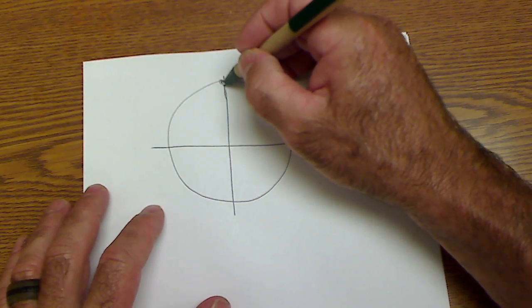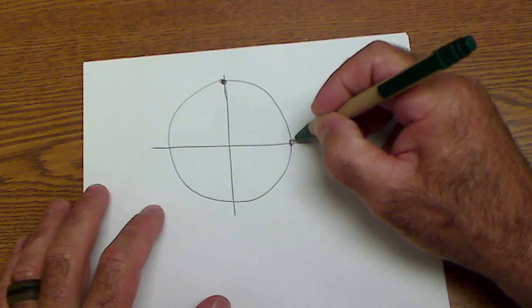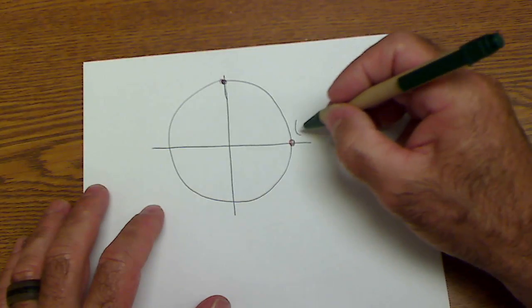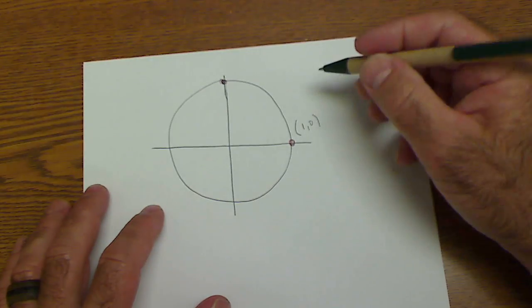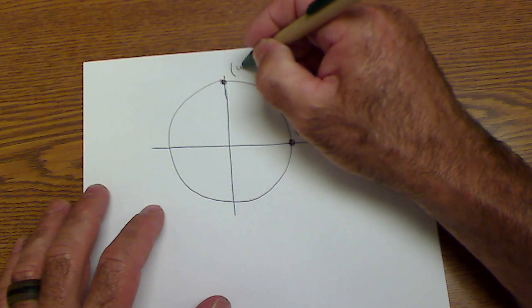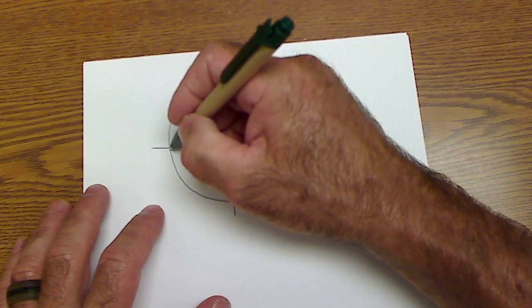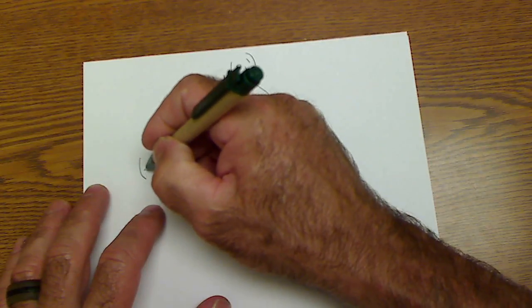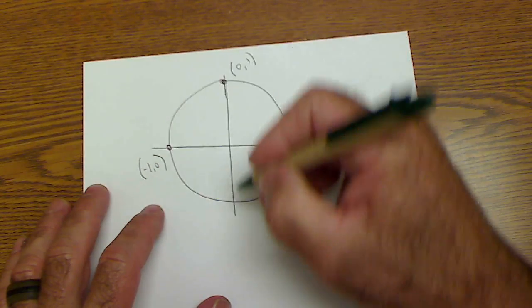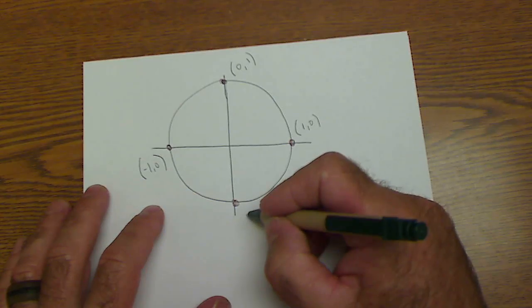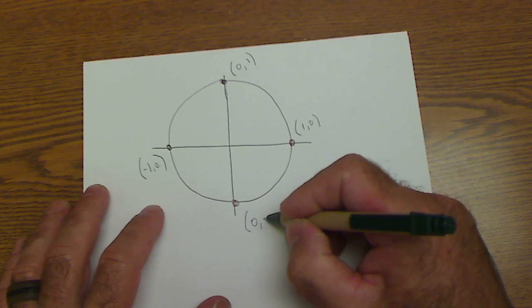First, let me draw my unit circle and look at these points right here. This ordered pair is x and then y, so it's 1, 0. This is over 0 up 1, and this right here is over negative 1 up 0. And finally my fourth point right here is over 0 up a negative 1.